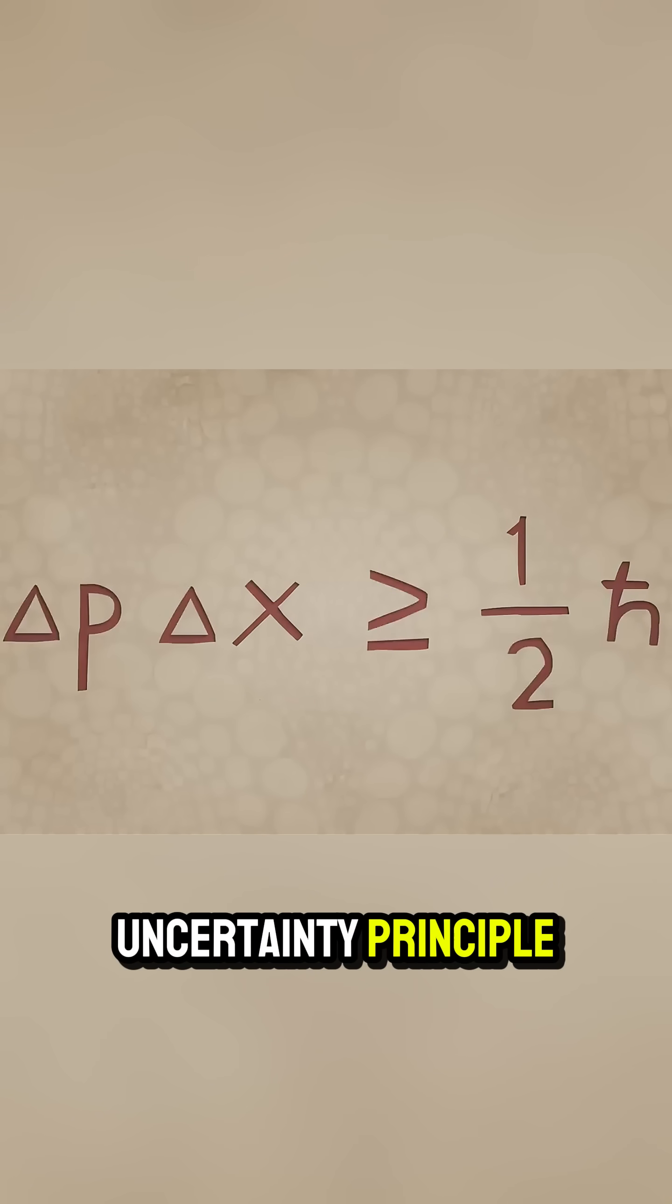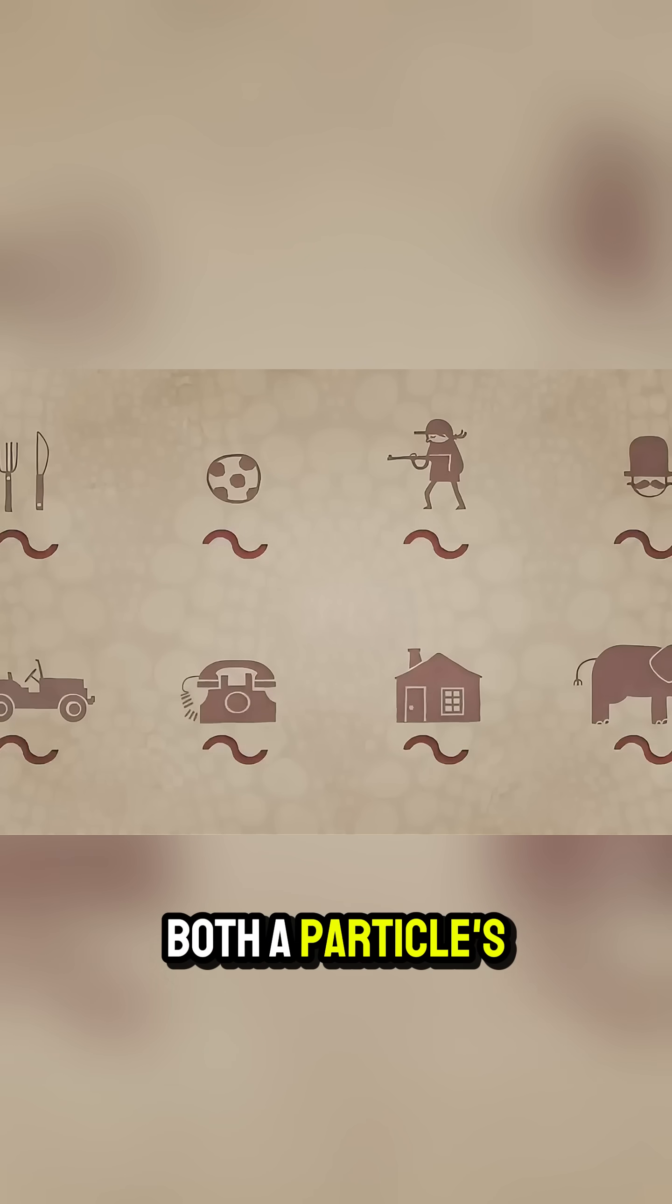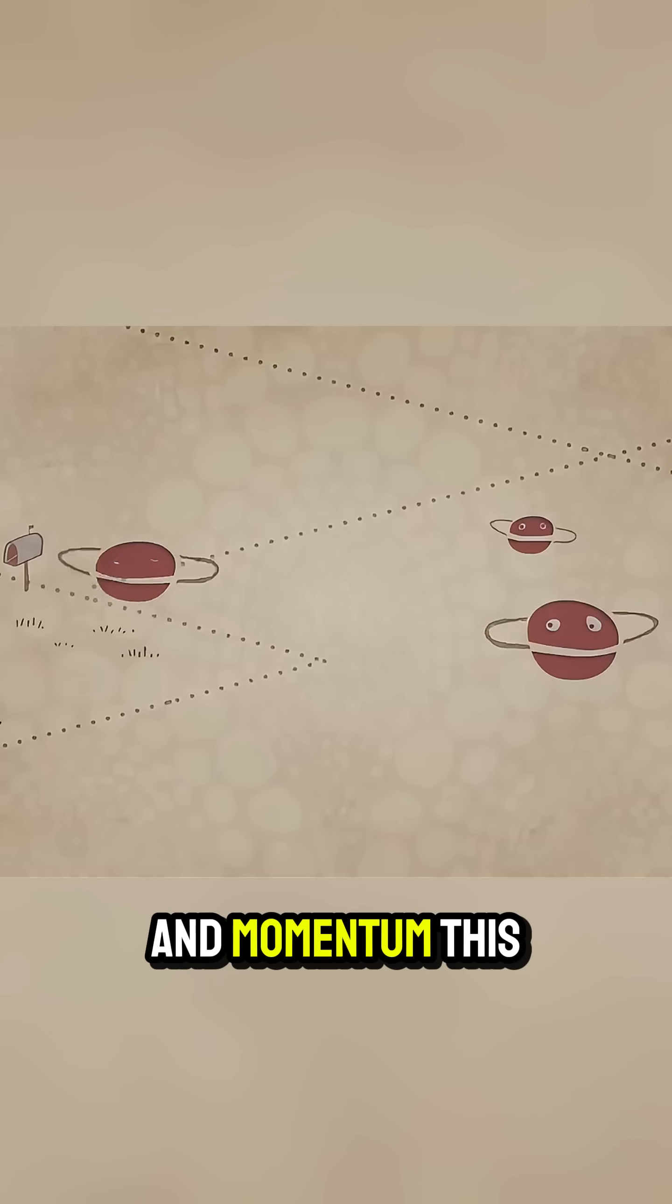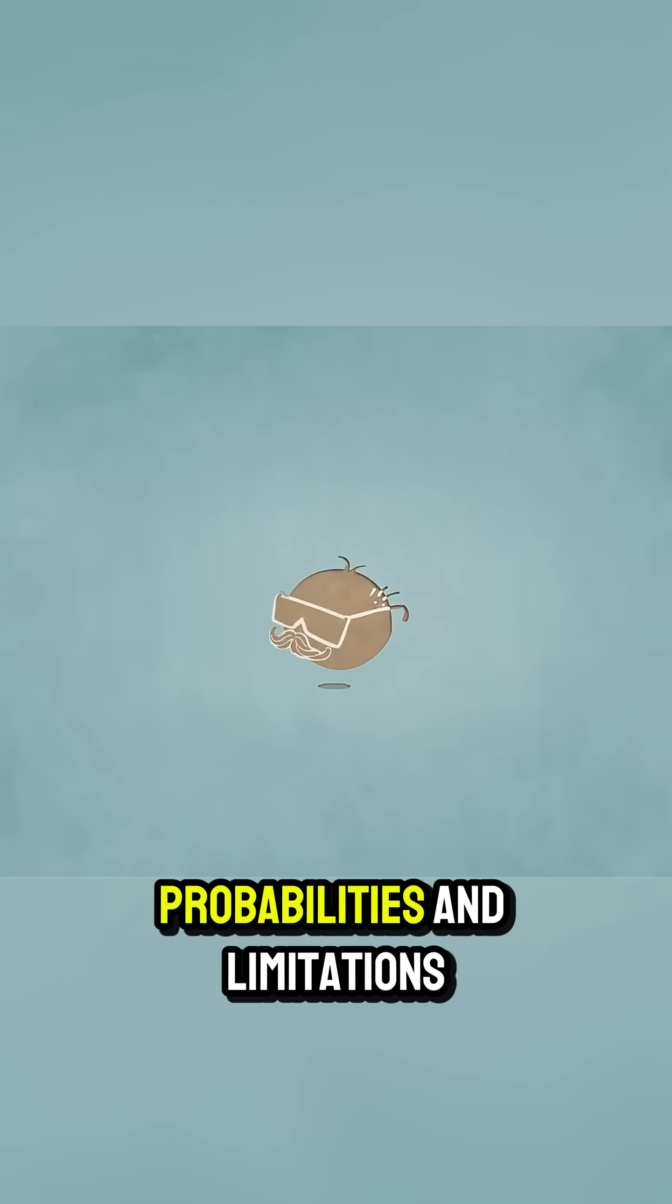He introduced the uncertainty principle, the idea that you can't simultaneously know both a particle's exact position and momentum. This wasn't just math. It redefined how we see the universe, not as a clockwork machine, but as a place full of probabilities and limitations.